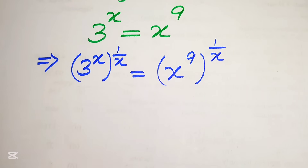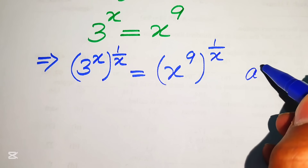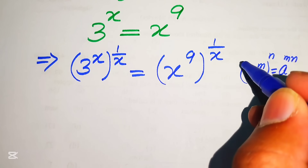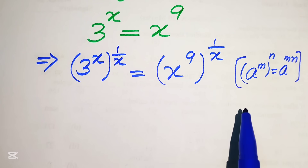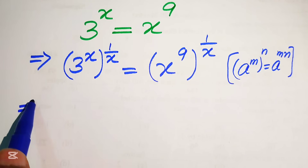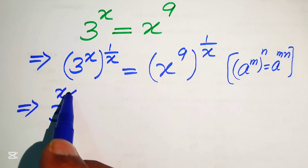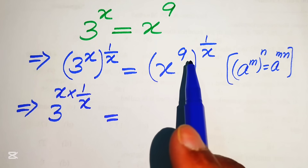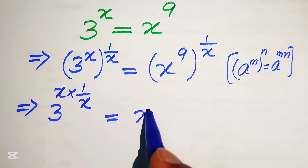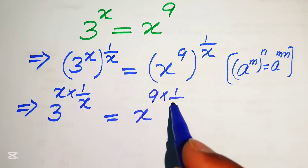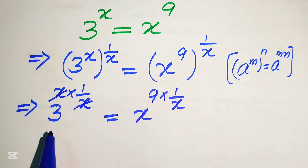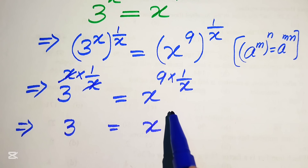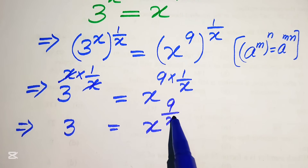Now we apply the exponent law: a to the power of m, to the power of n, equals a to the power of m multiplied by n. So we multiply the two exponents on each side. This gives 3 to the power of x times 1 over x — the x cancels — giving us 3 equals x to the power of 9 divided by x.